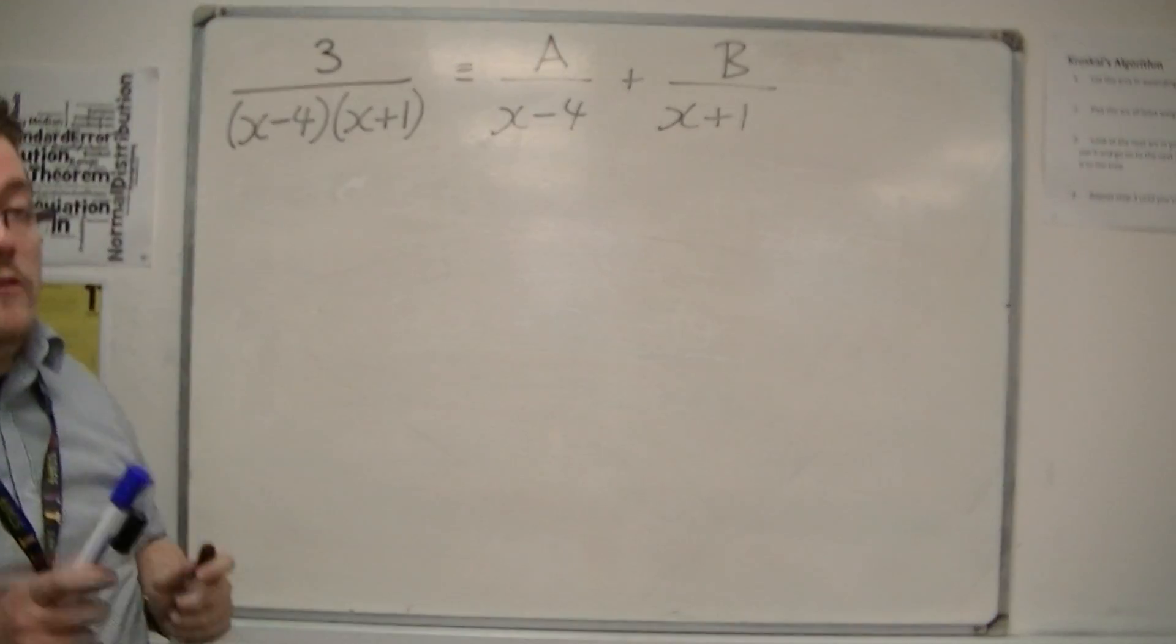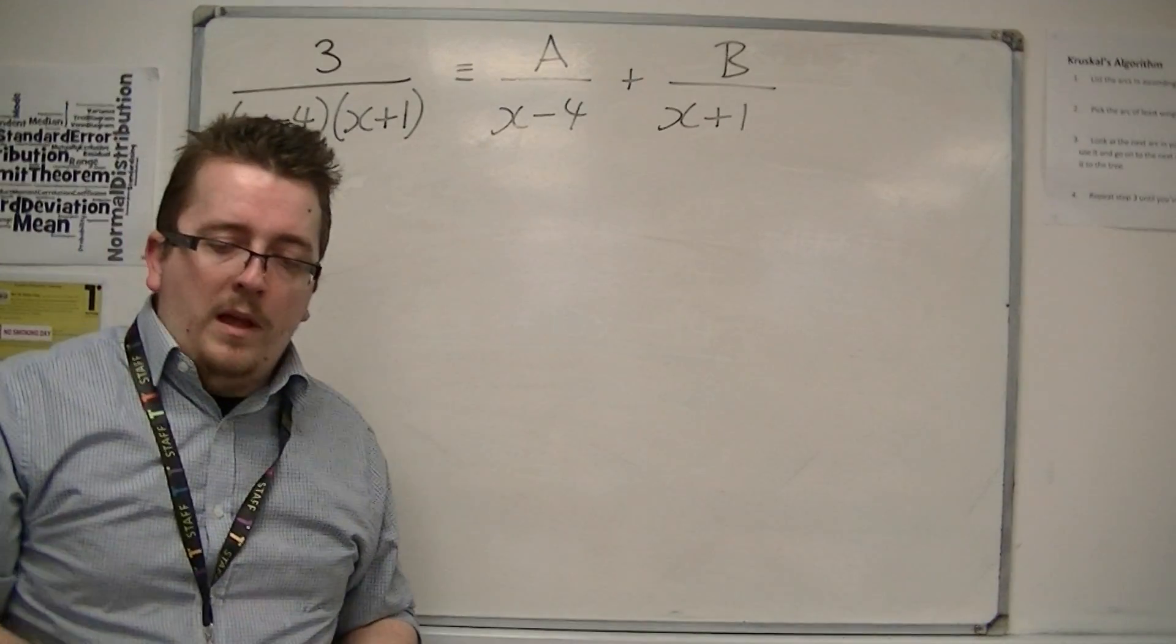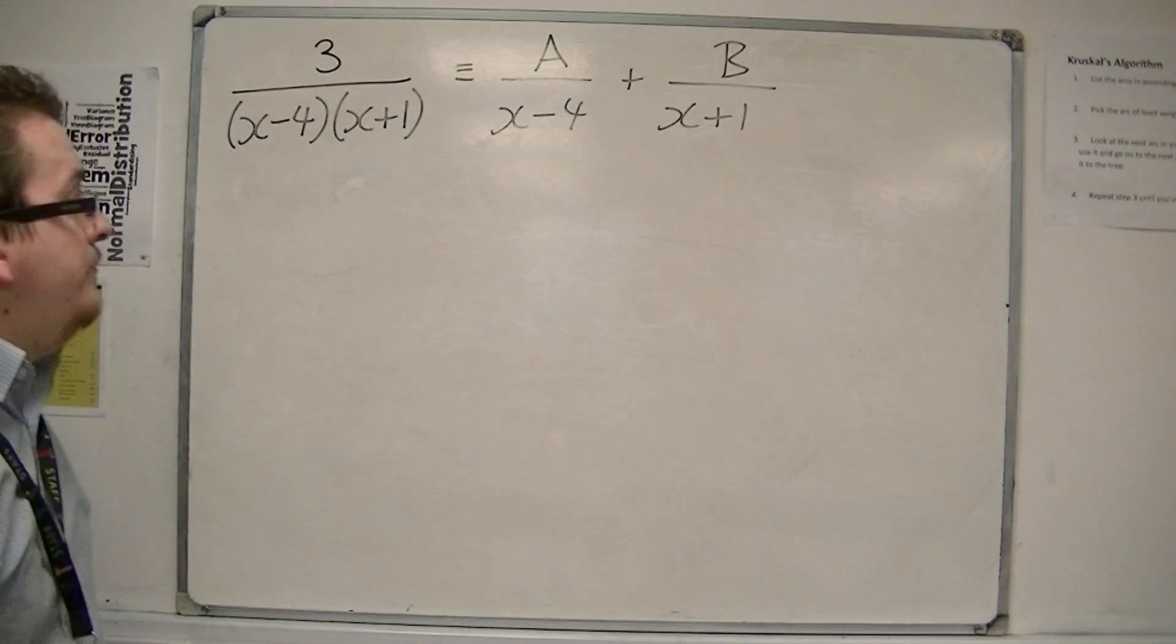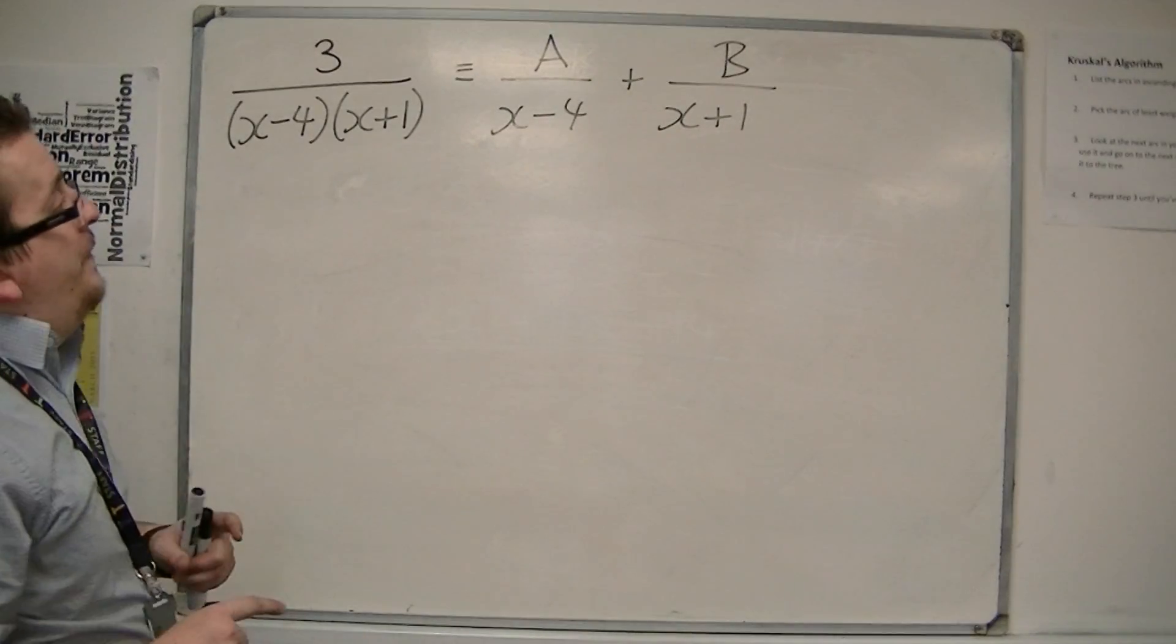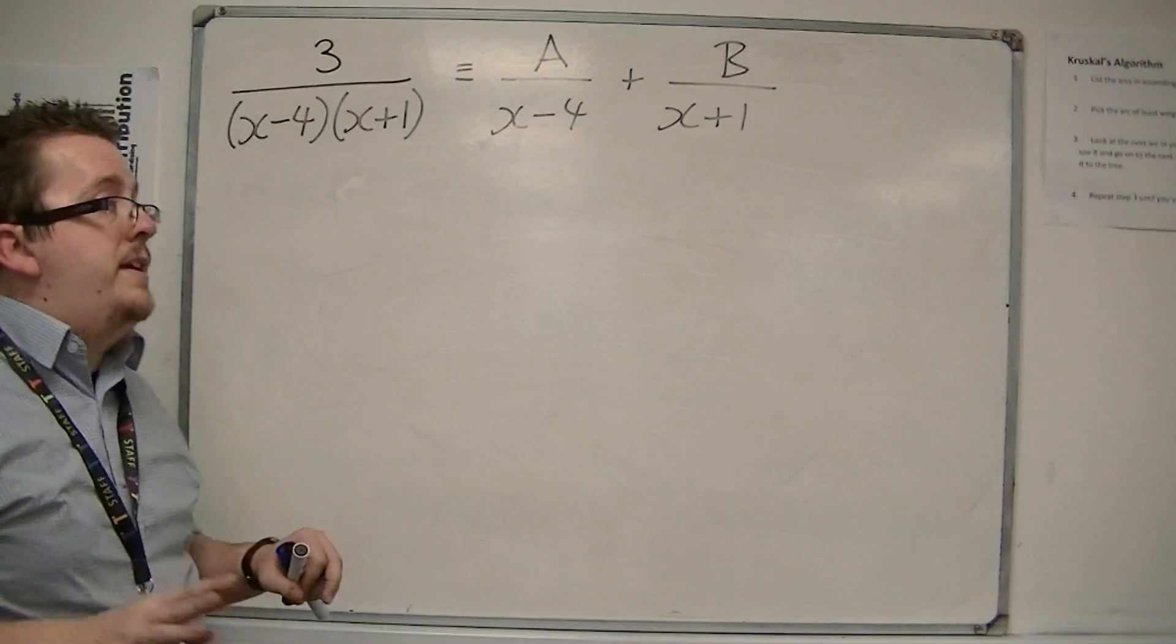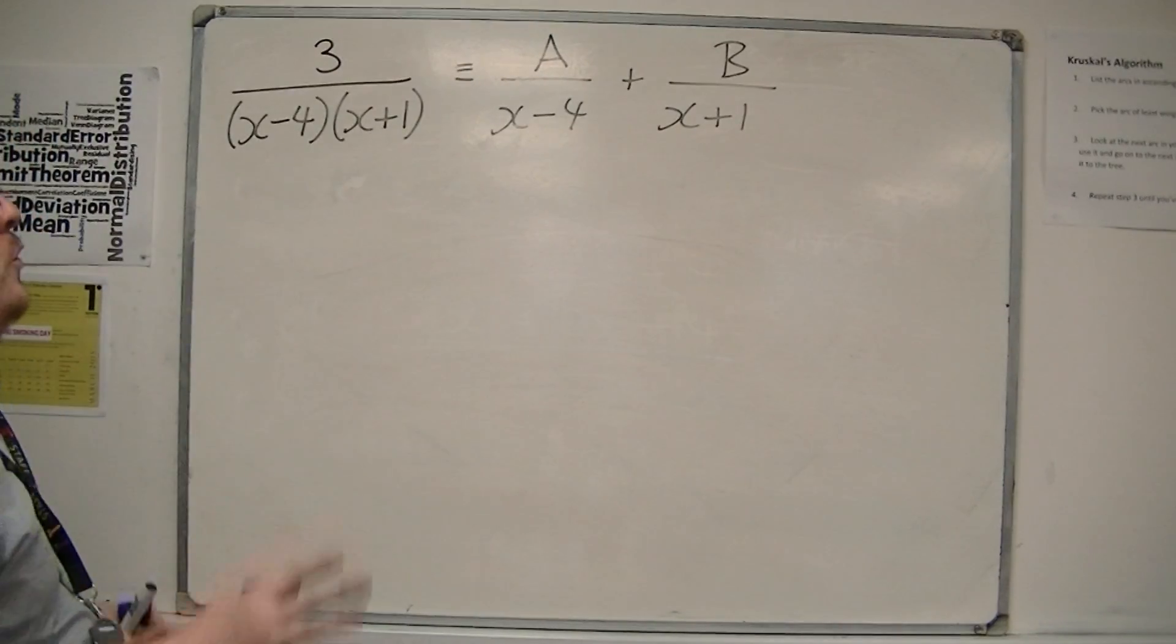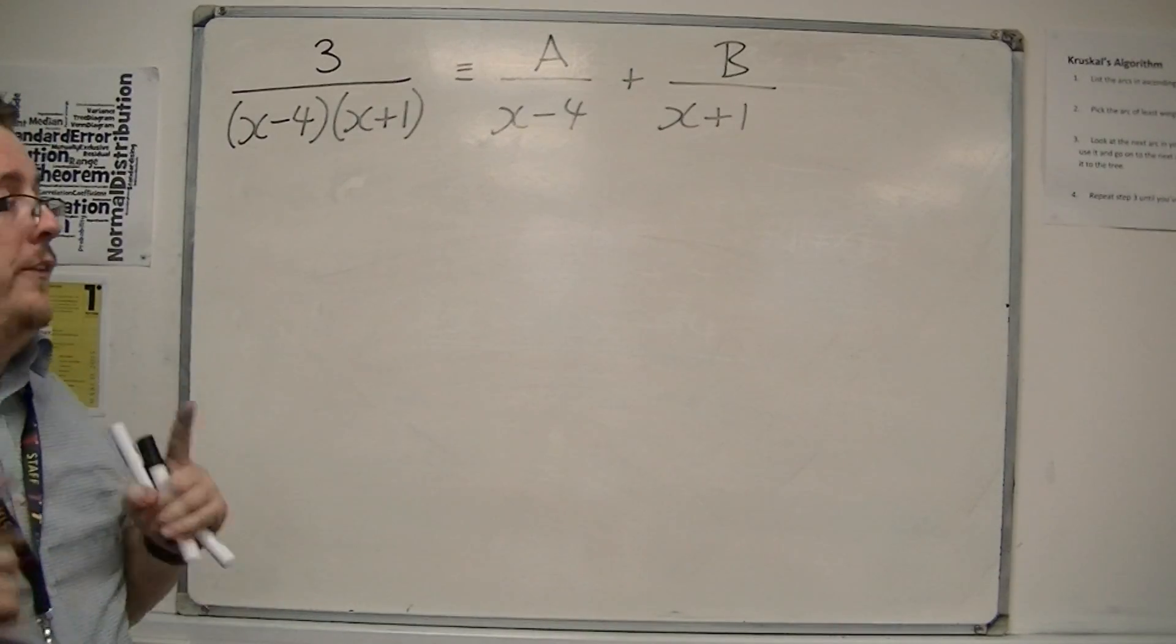Now, this equivalency is very important, and I'll come through to that in a minute. What we're going to do first is multiply both sides by the x minus 4 and the x plus 1 at the same time.